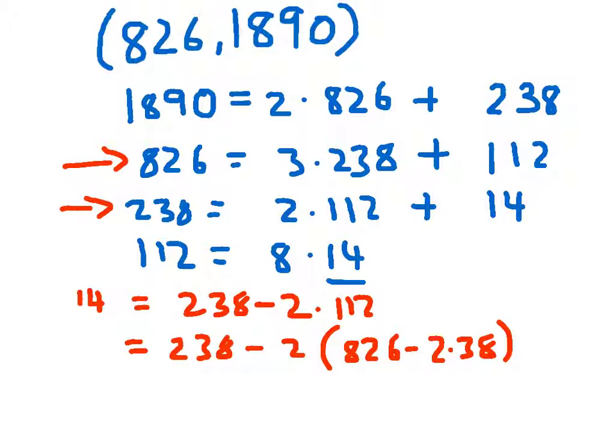I'm going to put that in this space here. That becomes minus 4 times 238 plus 4, so that gives 5 there.